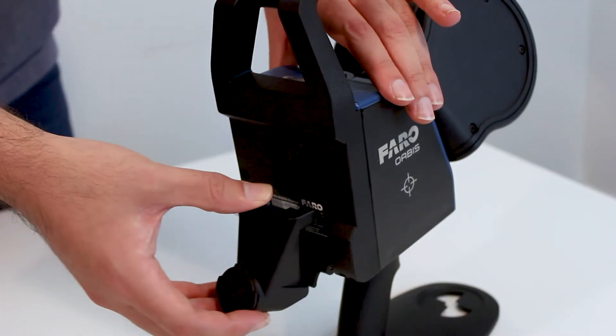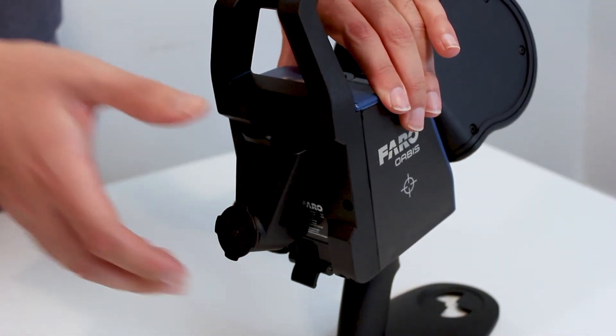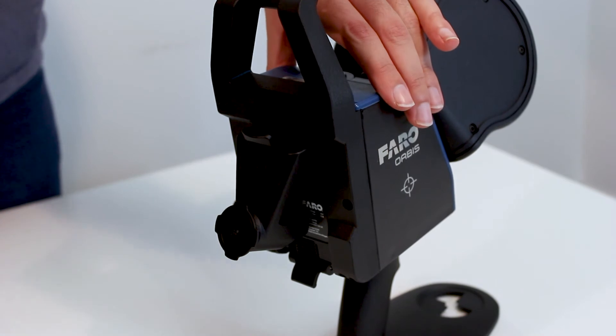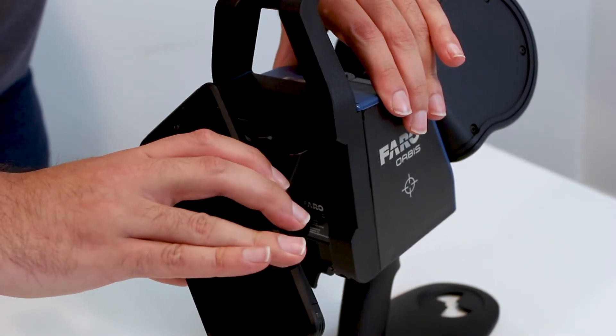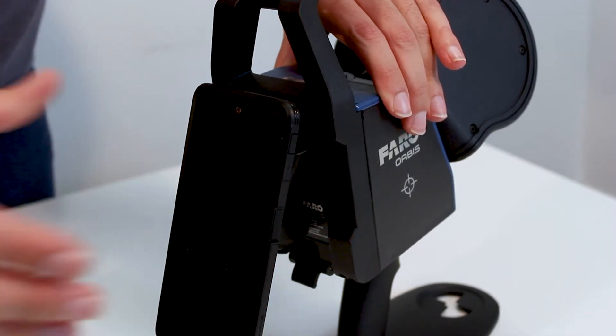To attach the phone mount to the back of the scanner, simply slide it up onto the V-mount. The second part, now attached to the back of the mobile device, connects to the quad lock, twists and is mounted.